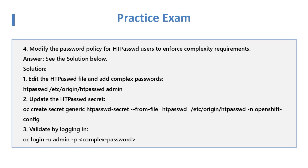Question 4: Modify the Password Policy for HTPasswd users to enforce complexity requirements. Solution: Edit the HTPasswd file and add complex passwords at '/etc/origin/htpasswd' for admin. Update the HTPasswd secret with 'oc create secret generic htpasswd-secret --from-file=htpasswd=/etc/origin/htpasswd -n openshift-config'. Validate by logging in with 'oc login -u admin -p <new-password>'.